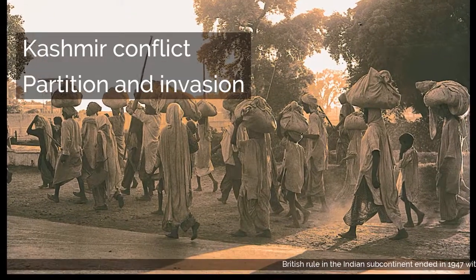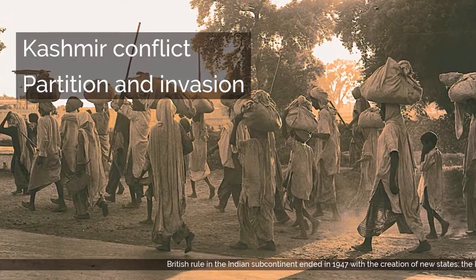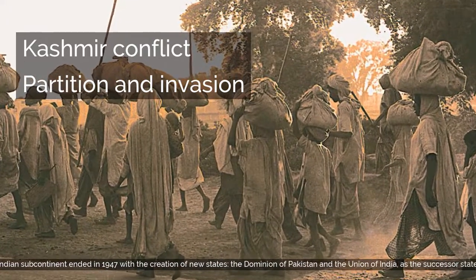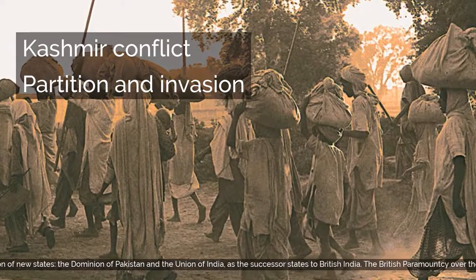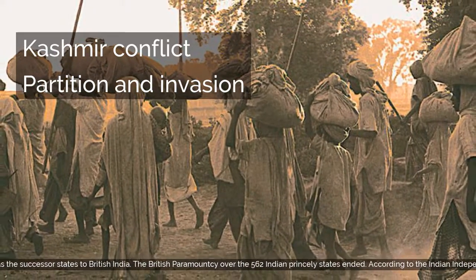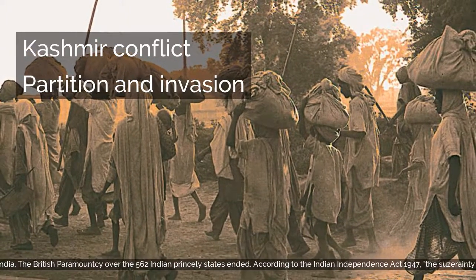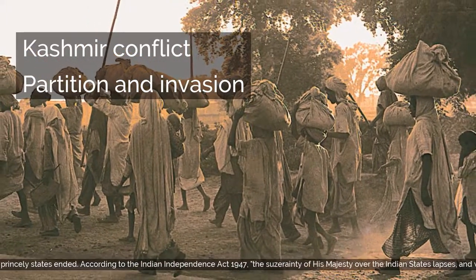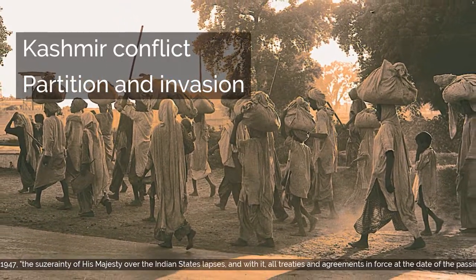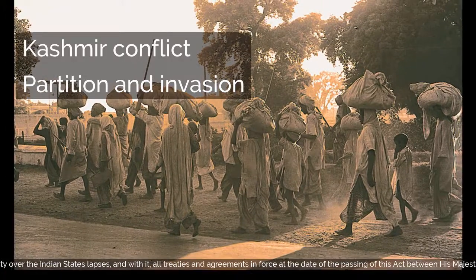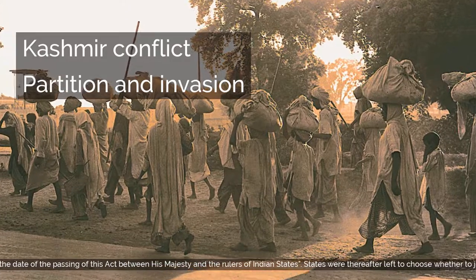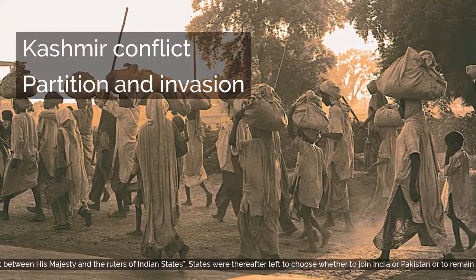British rule in the Indian subcontinent ended in 1947 with the creation of new states — the Dominion of Pakistan and the Union of India — as the successor states to British India. The British paramountcy over the 562 Indian princely states ended. According to the Indian Independence Act 1947, the suzerainty of His Majesty over the Indian states lapses, and with it all treaties and agreements in force at the date of the passing of this act between His Majesty and the rulers of Indian states.